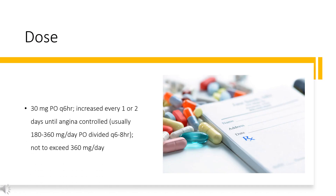Dose: The dose of this medicine will be different for different patients. Angina — Conventional: 30 mg PO Q6HR, increased every 1 to 2 days until angina is controlled, usually 180 to 360 mg/day PO divided Q6-8HR, not to exceed 360 mg per day.